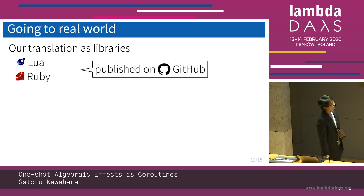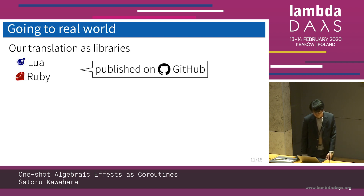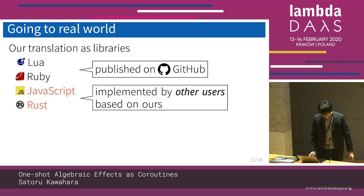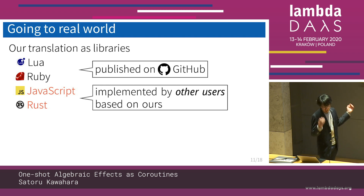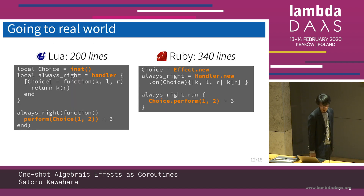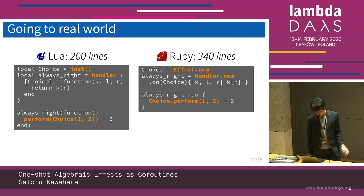Based on the translation, we implemented a one-shot algebraic effects library in Lua and Ruby, and we published this library on GitHub. Other programmers also gave library implementations in JavaScript and Rust, which shows that our translation and implementation are versatile and simple. Our translation is very compact: only 200 lines in Lua and 340 lines in Ruby.